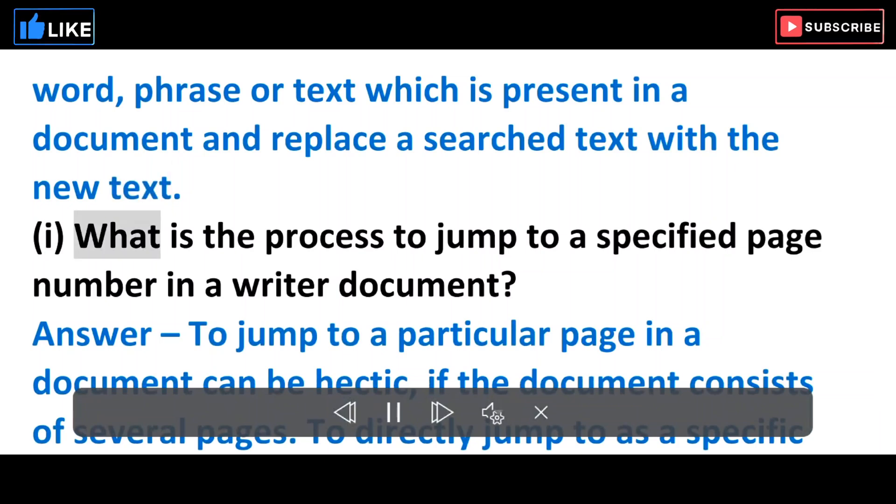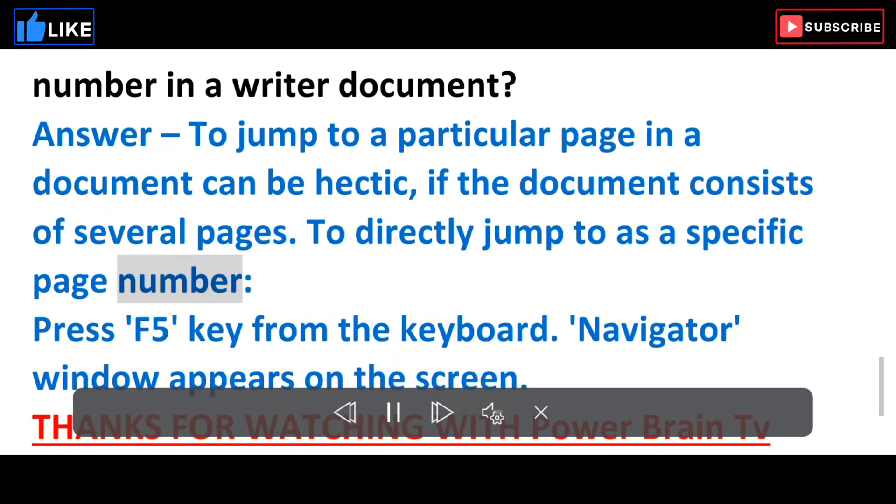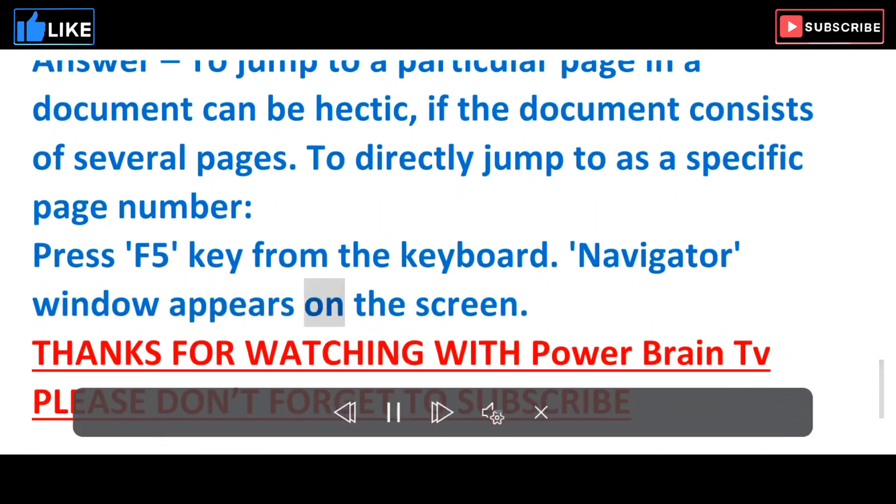I. What is the process to jump to a specified page number in a Writer document? Answer: To jump to a particular page in a document can be hectic if the document consists of several pages. To directly jump to a specific page number, press F5 key from the keyboard. Navigator window appears on the screen.